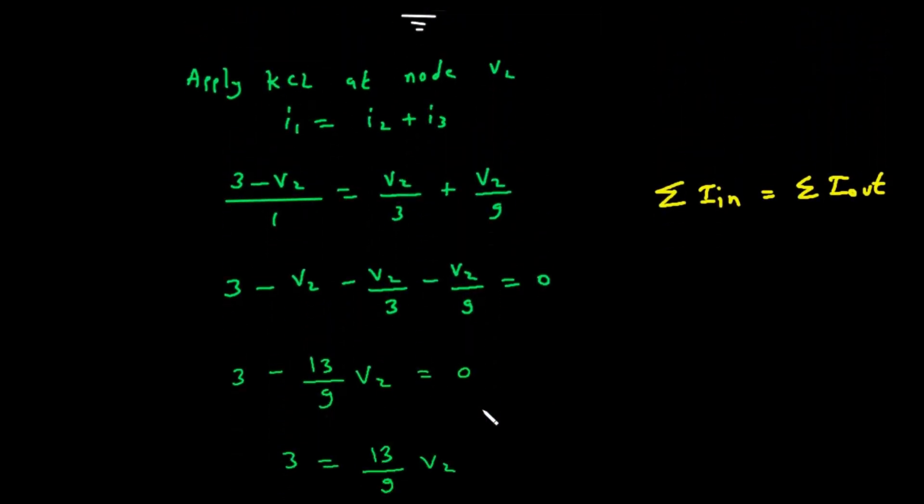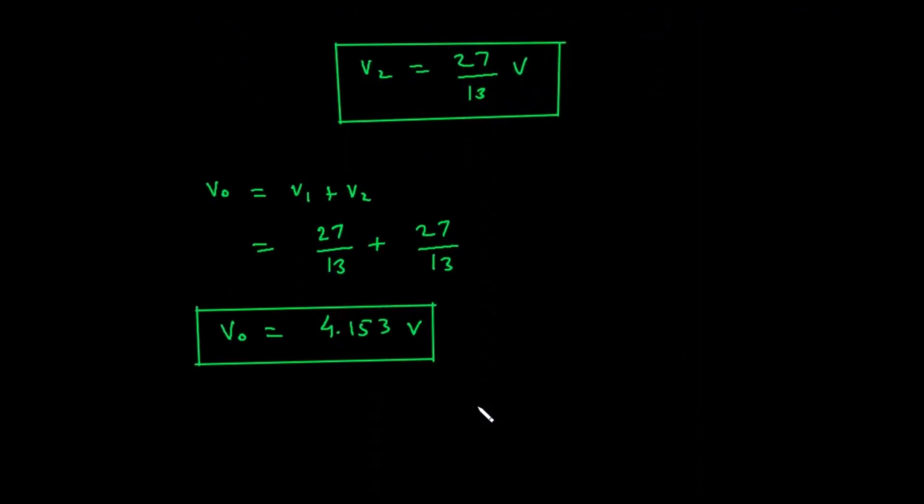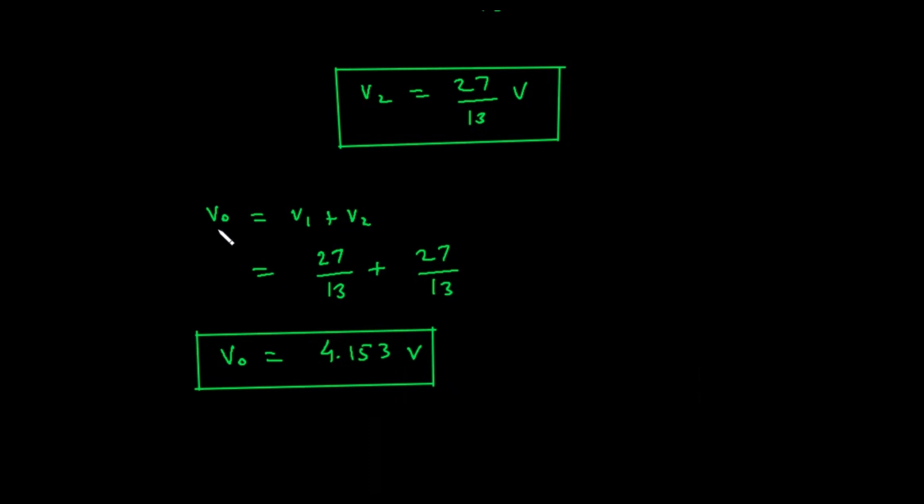Part 3, the final combination. We're at the final step. The superposition theorem tells us that the total voltage, V0, is the sum of the individual voltages we calculated. V0 equals V1 plus V2. We found that V1 is 27 over 13 volts, and V2 is also 27 over 13 volts. So, V0 equals 27 divided by 13 plus 27 divided by 13. Since they have the same denominator, we just add the numerators. 27 plus 27 equals 54. So, V0 equals 54 divided by 13 volts.